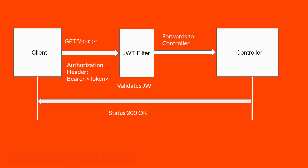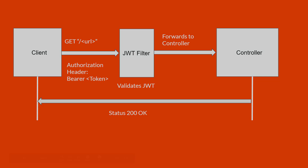This is how the actual process looks like. The client makes a request to the server. The request is intercepted by a custom filter called the JWT authentication filter. This filter will retrieve the access token and validate it. If the validation is successful, the request will be forwarded to the corresponding controller. Now let's go ahead and implement this functionality.